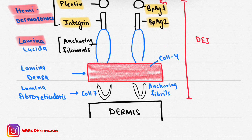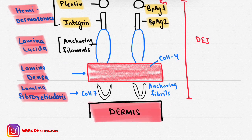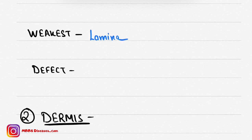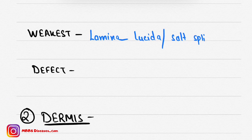So we have four layers of the dermoepidermal junction: hemidesmosomes, lamina lucida (also known as the salt split layer), lamina densa, and lamina reticularis, with the dermis below. The weakest layer is the lamina lucida, which is the salt split layer — it splits at this level, which is why it is called the salt split layer.